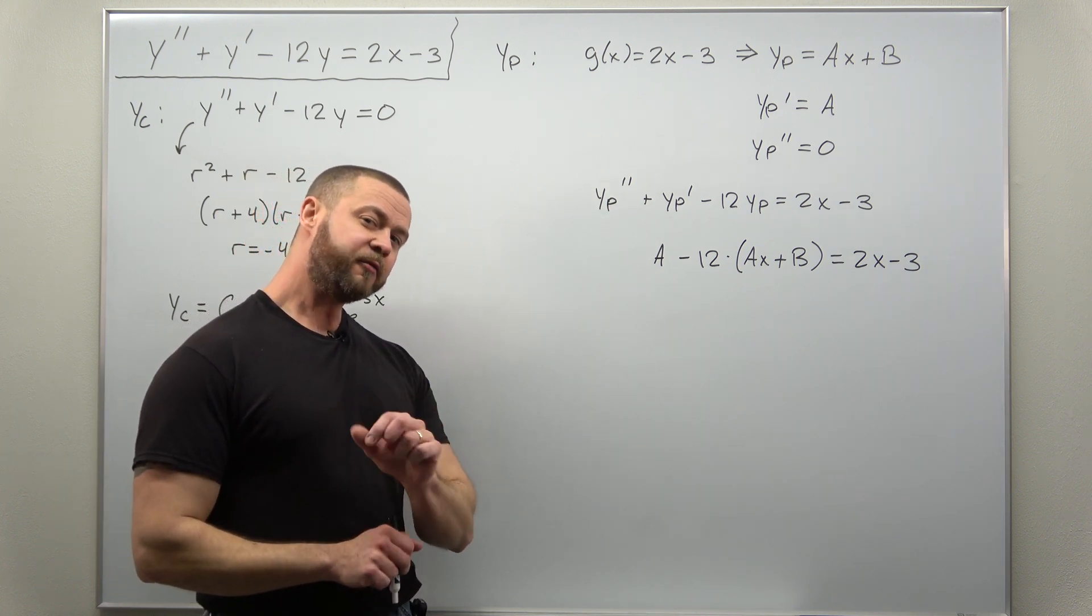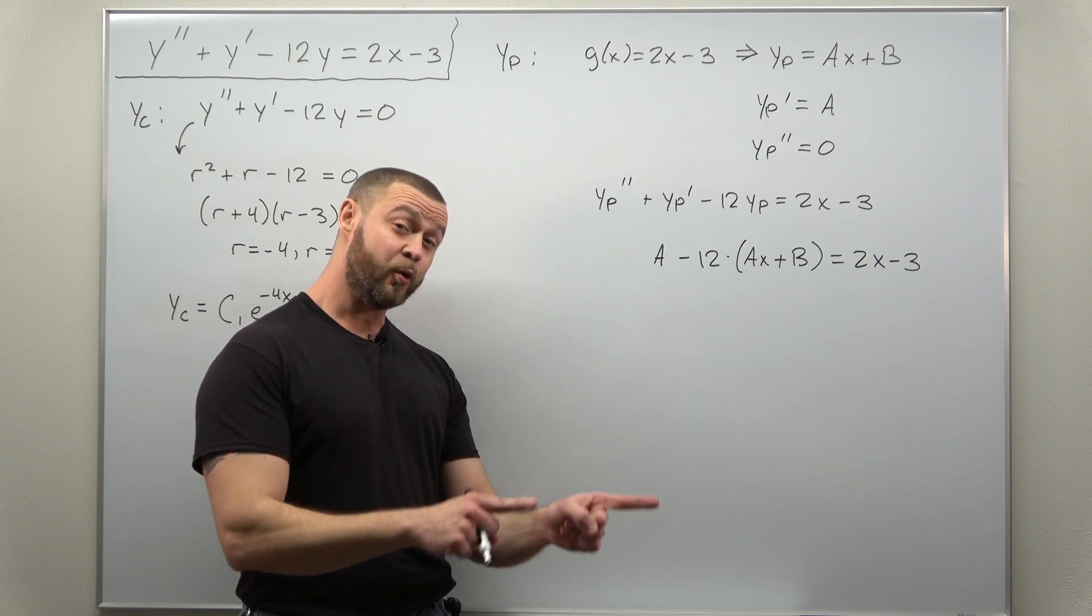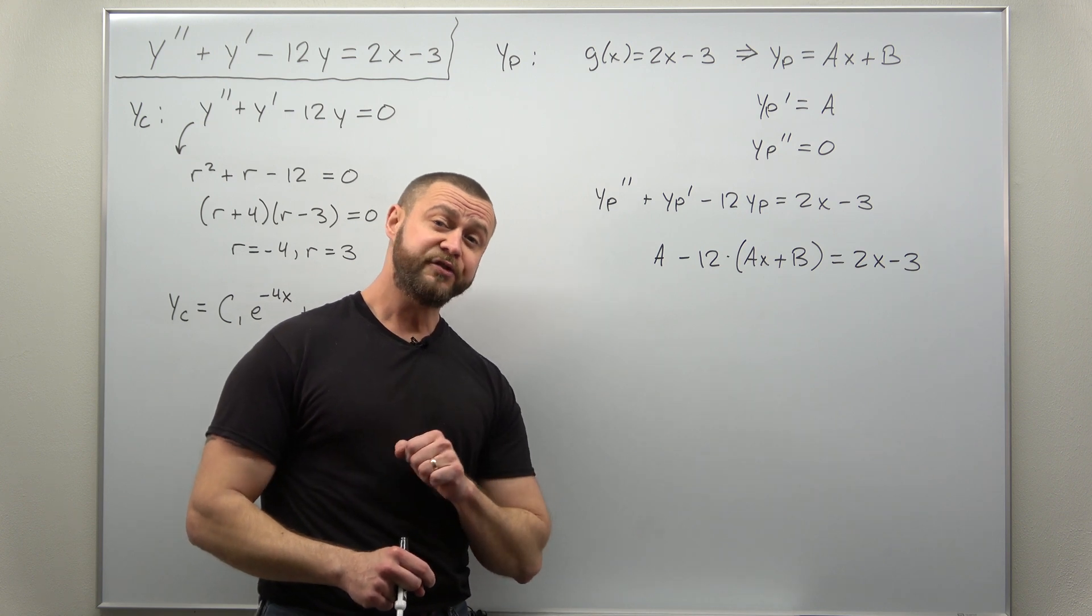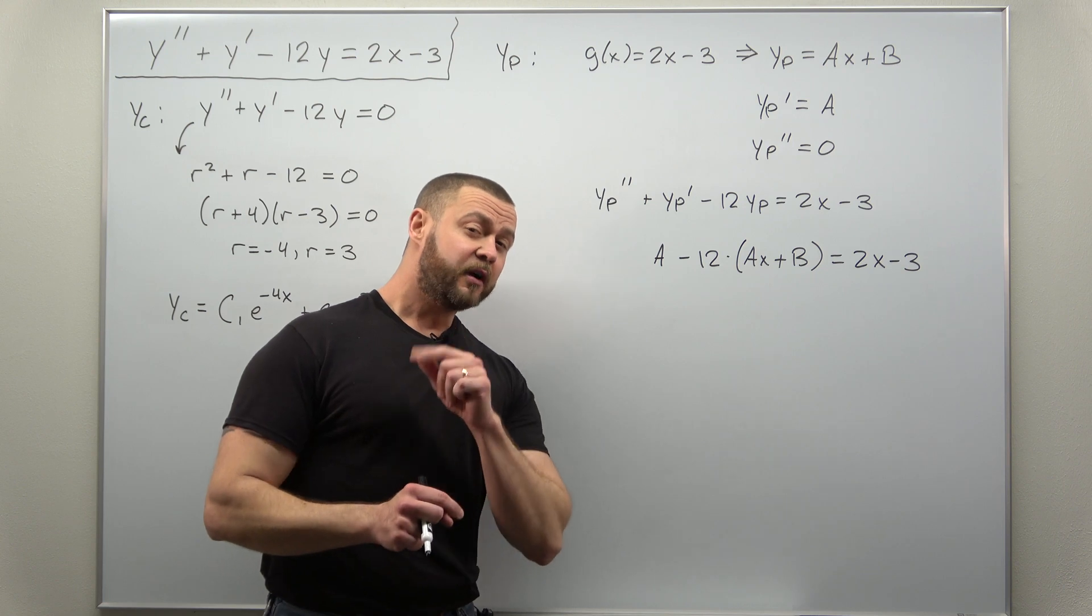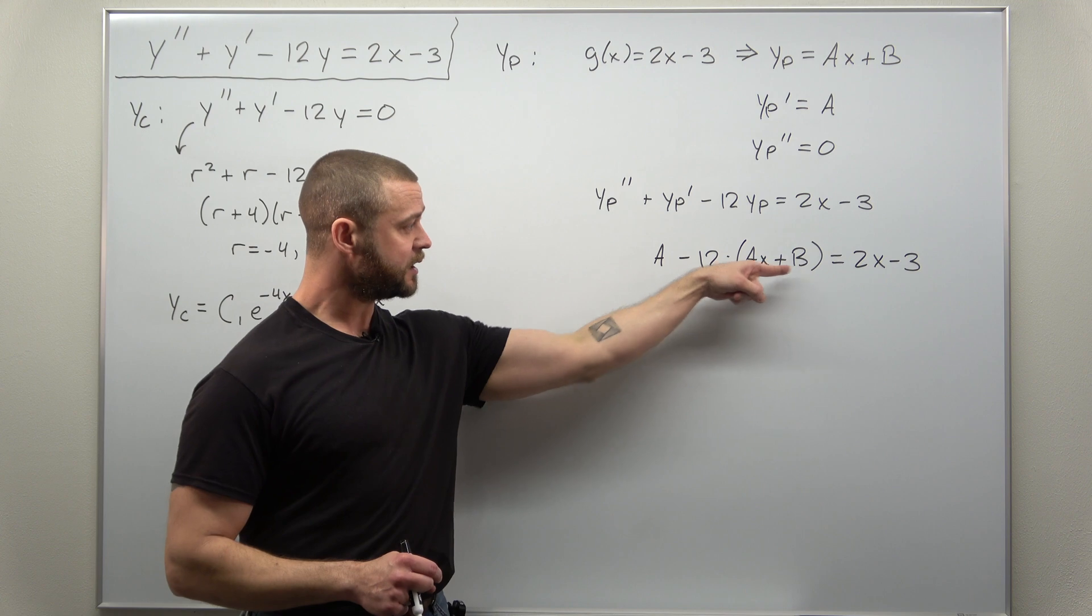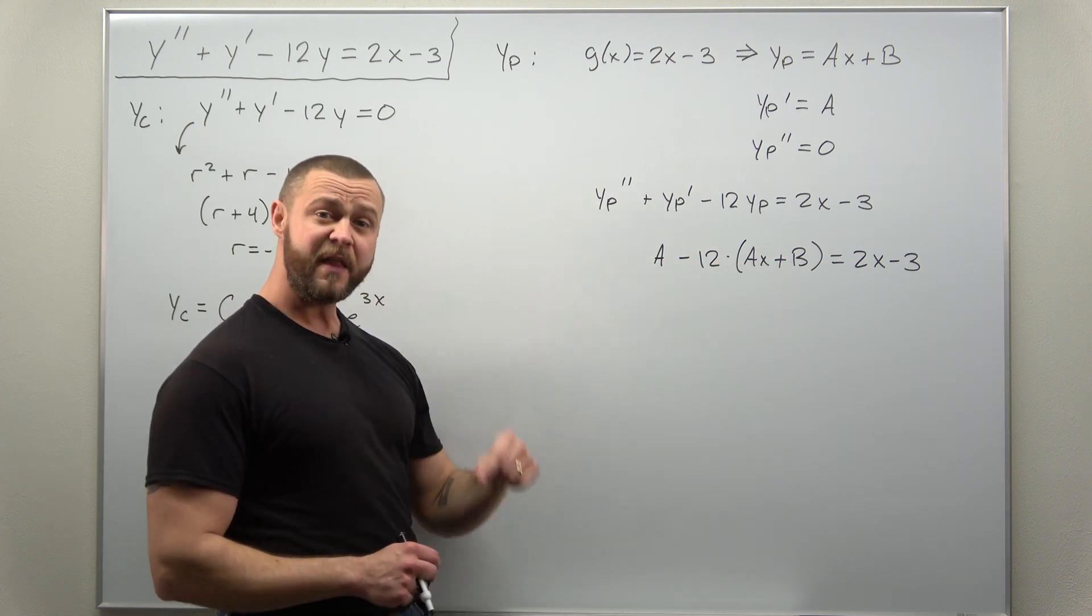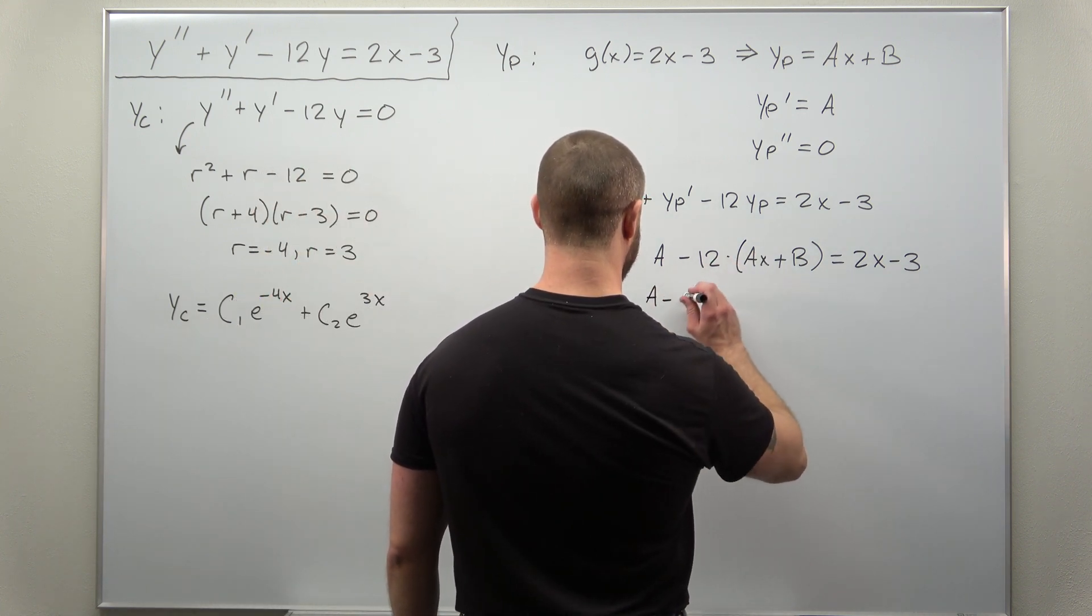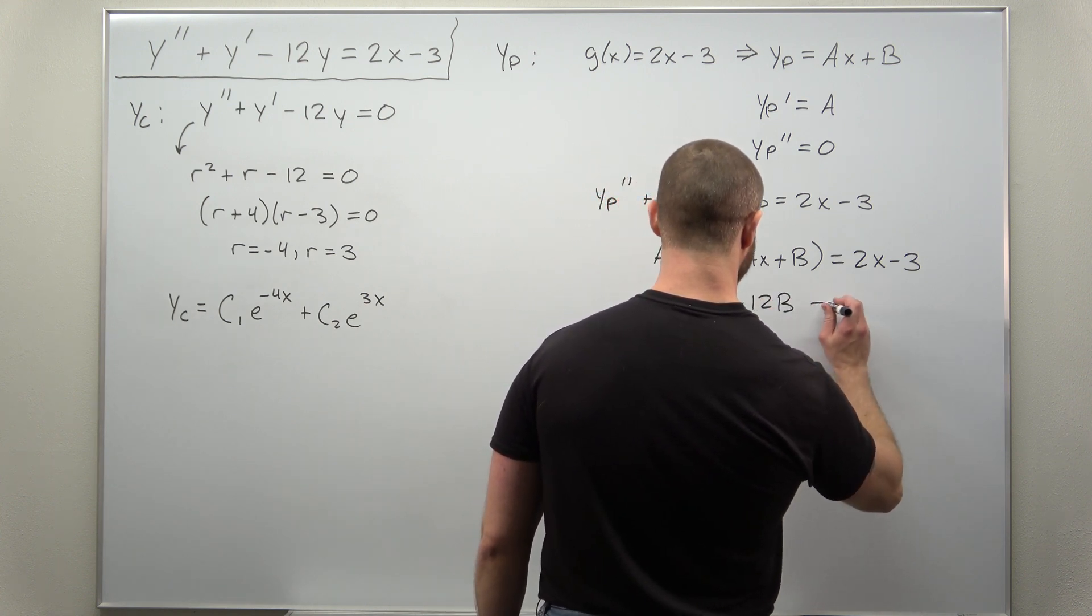How we solve for the values of a and b here is very similar if you think back to calc 2 with partial fraction decomposition, where you solved for constants using the method of equating coefficients. Let me multiply out this right-hand side. We have powers of x and constants.